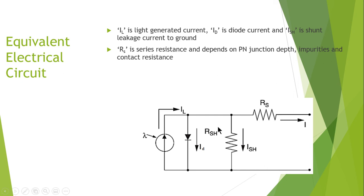I have already discussed the series resistance. RS is a series resistance and it depends upon the depth of the PN junction, the impurities, and the contact resistances.